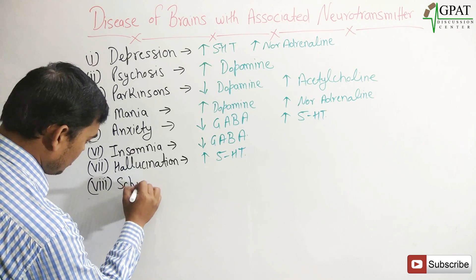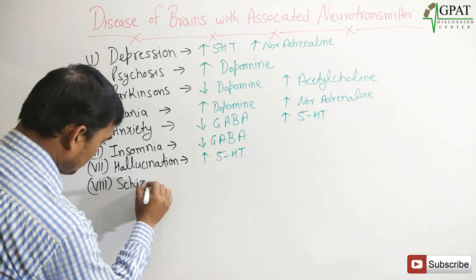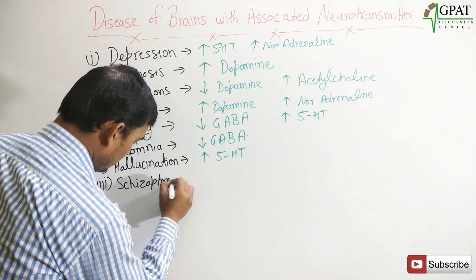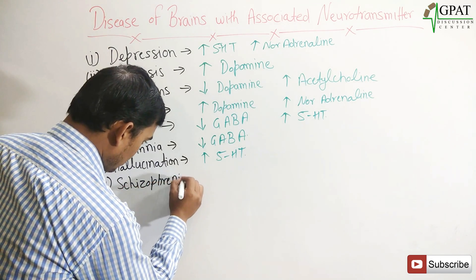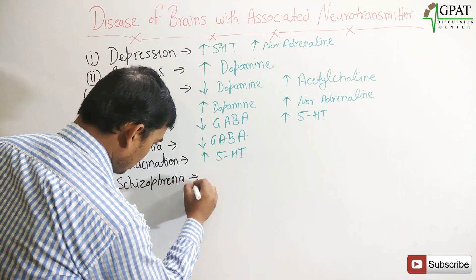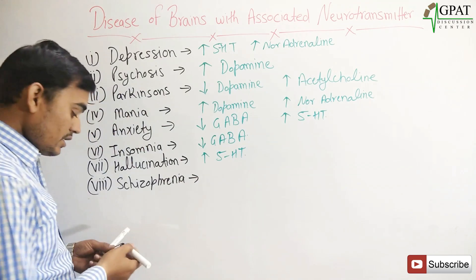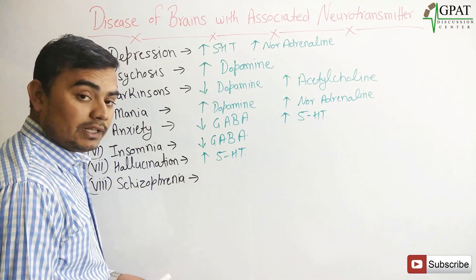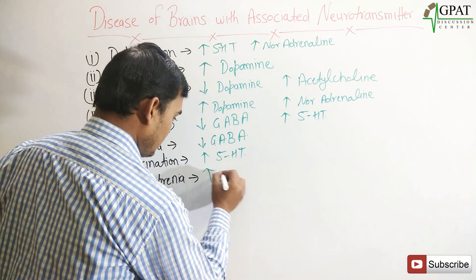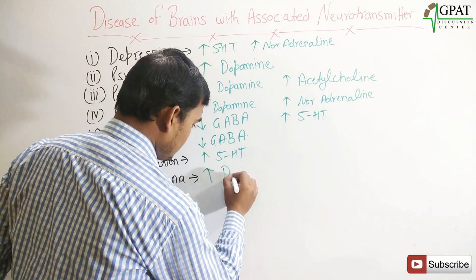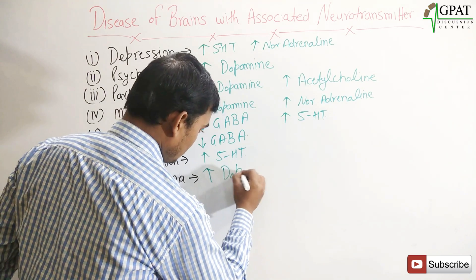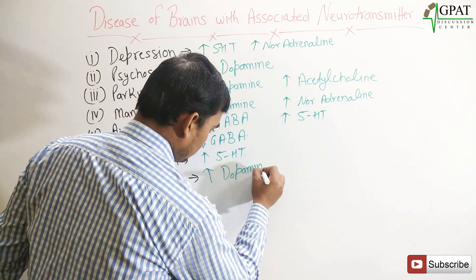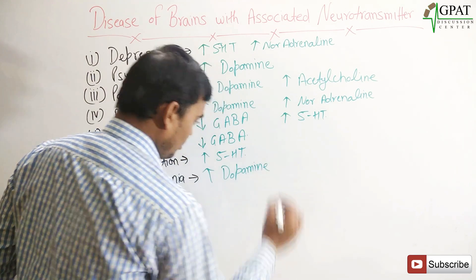Next is schizophrenia. In schizophrenia, your dopamine level increases — increased dopamine.